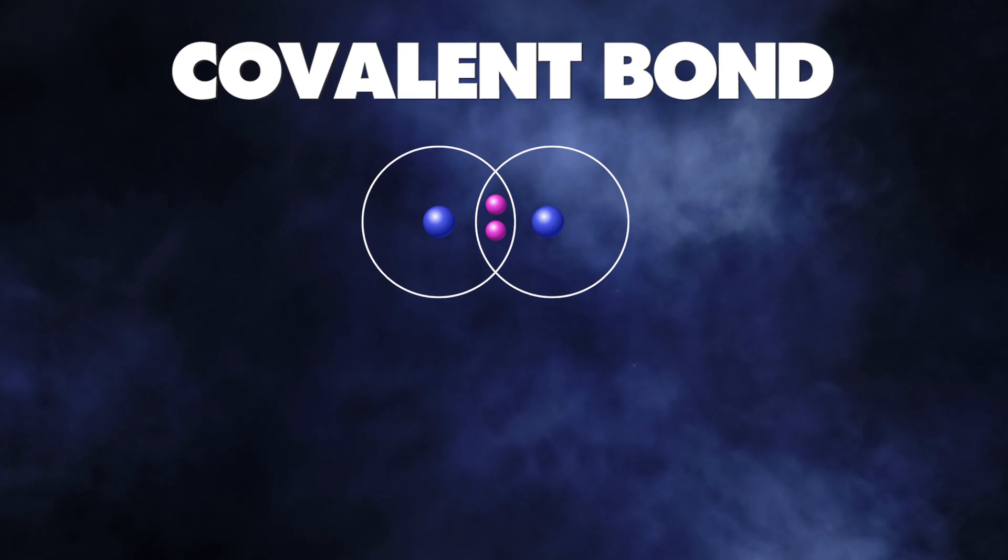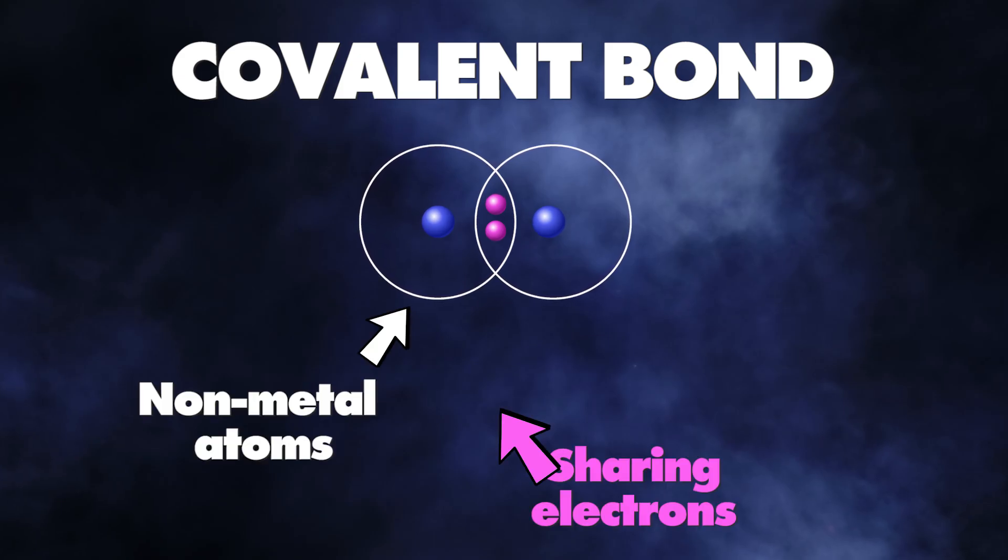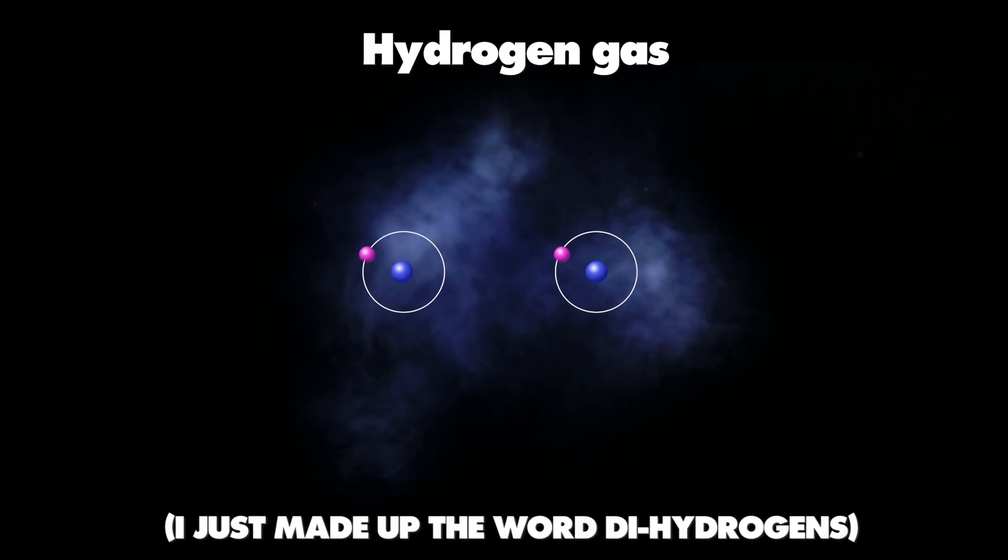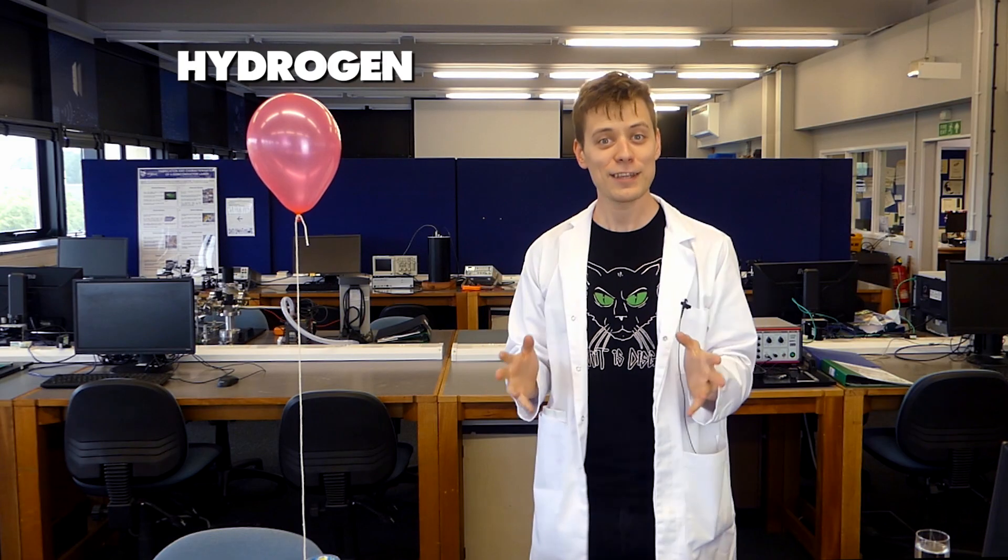You see the definition of a covalent bond is non-metal atoms sharing electrons. But if I were to introduce a small amount of energy into some hydrogen gas it would split some of these happy dihydrogens into single hydrogens that only have one electron each. If this happens the single hydrogens are going to go absolutely crazy and react with anything they can nearby just to get the electrons they need. Like this.